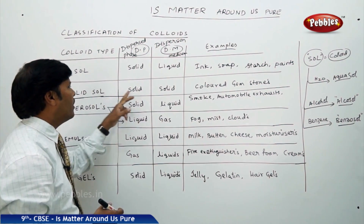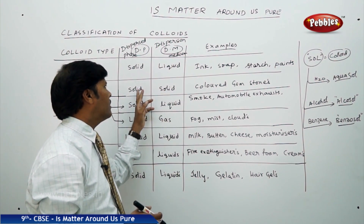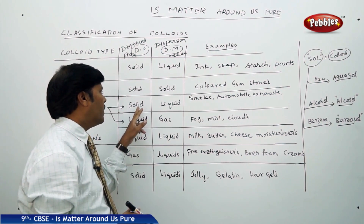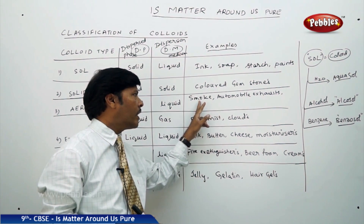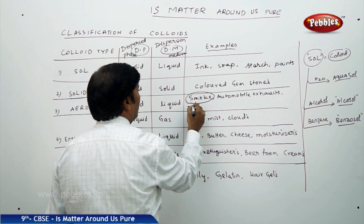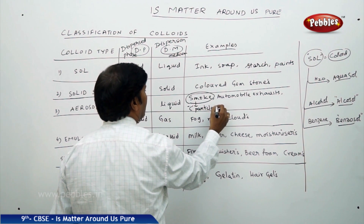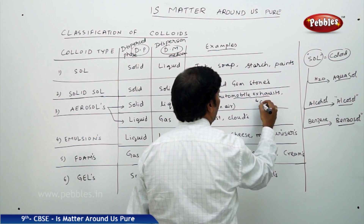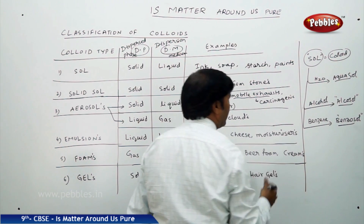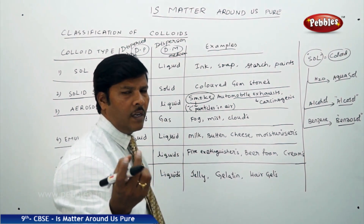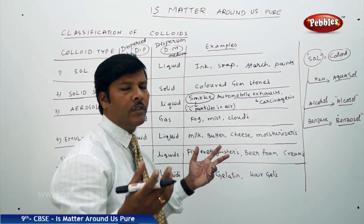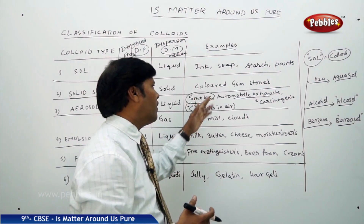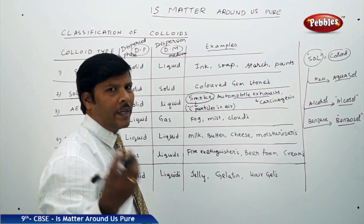For solid sol, where solid is dispersed in solid, the best example is colored gemstones. For aerosols, there are two types: solid in gas — such as smoke, which is made up of carbon particles in air. Automobile exhausts also release poisonous carcinogenic fragments of lead, mercury, and other metal fragments into the air, creating pollution. This polluted air is made up of colloidal particles.